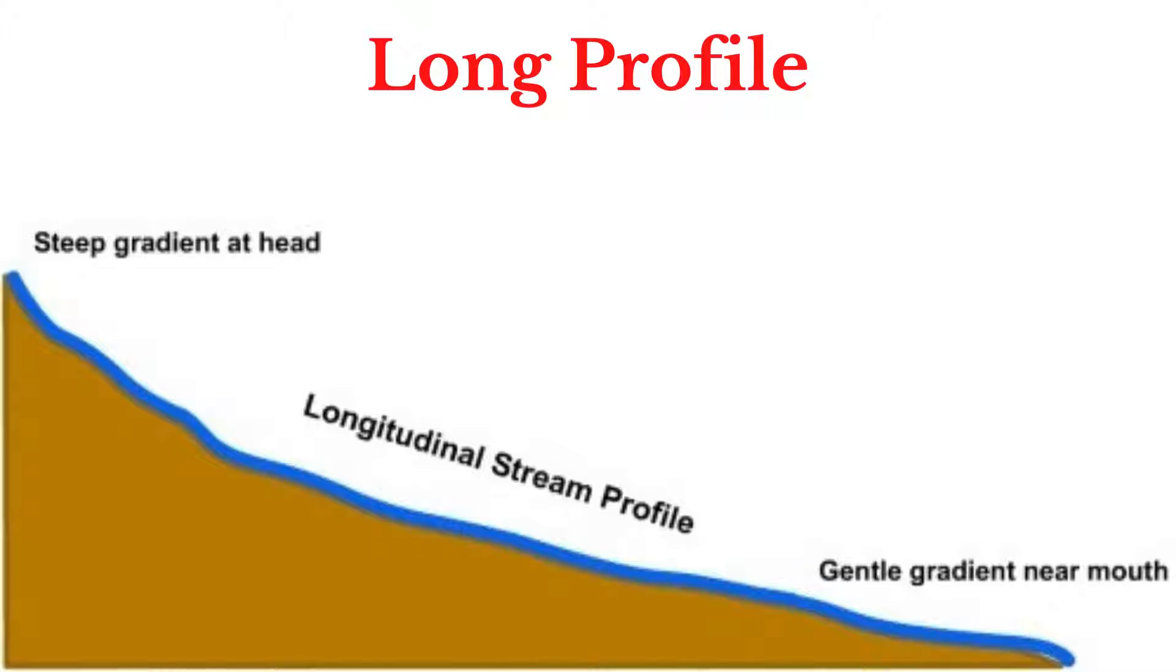A typical river will always try to form a concave shape in its long profile. Remember, a concave slope is steeper at the top and gentle at the bottom. This shape indicates that the river is in balance or equilibrium with the environment. If this is achieved, the river is said to be graded.